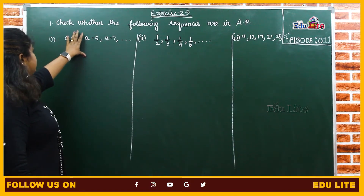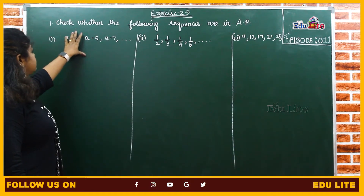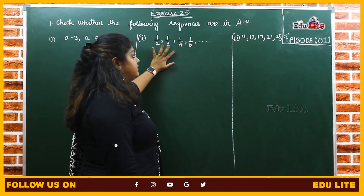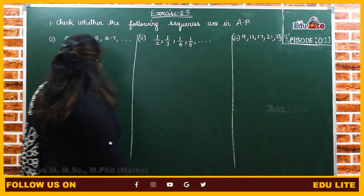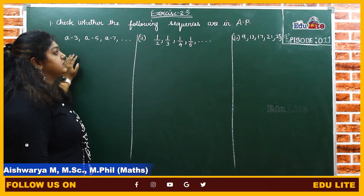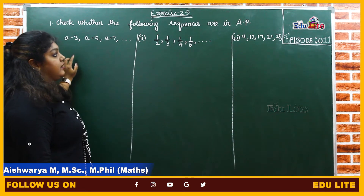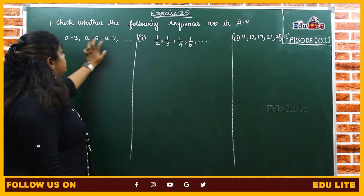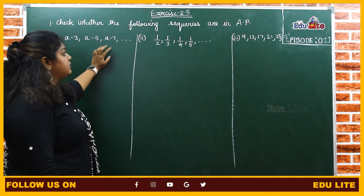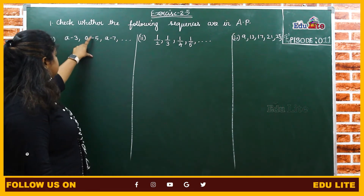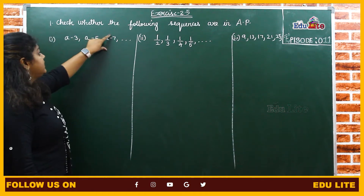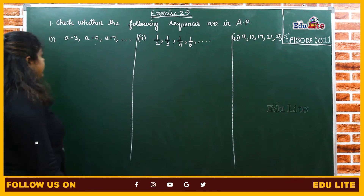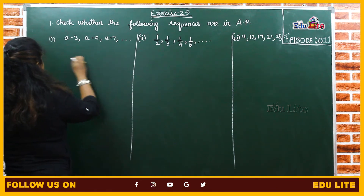In exercise 2.5, the first problem is to check whether the following sequences are in AP. We have 5 subdivisions and will do them one by one. To find whether a sequence is in AP, the common difference between any two consecutive numbers must be equal. We check this by computing T2 minus T1 and T3 minus T2. If the D value is equal, then it is an AP.